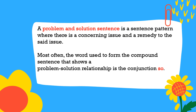A problem-and-solution sentence is a sentence pattern where there is a concerning issue, or problem, and a remedy, or solution, to the said issue. So most often, the word used to form the compound sentence that shows a problem-solution relationship is the conjunction SO.